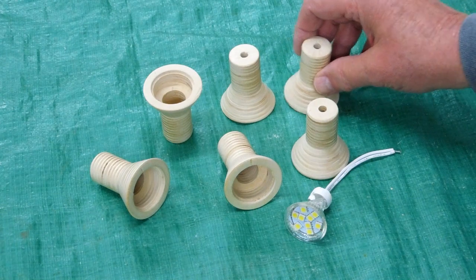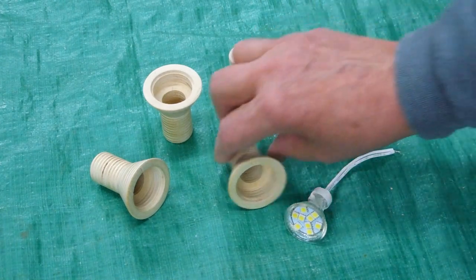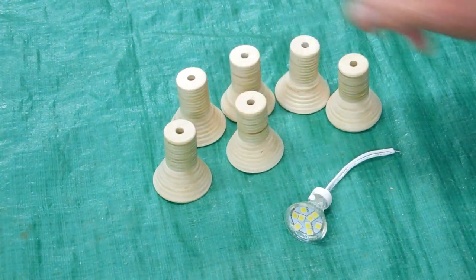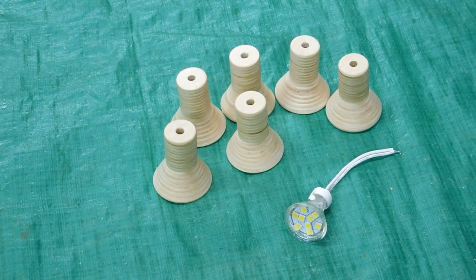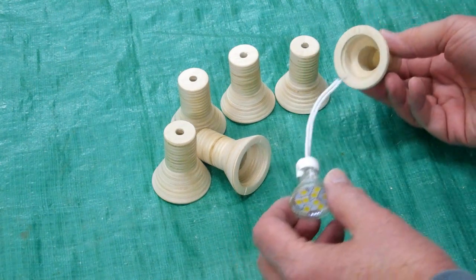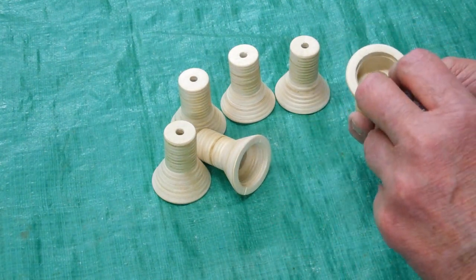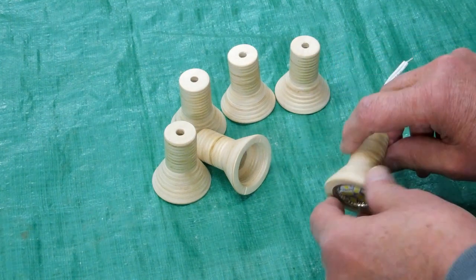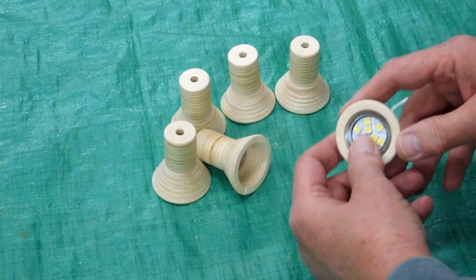So the six pieces have been turned. They're not exactly the same but they look pretty close. It's kind of fun to see how close you can get them when you're doing this freehand. And the light will fit in there like that. That's not the final configuration but we're getting there.